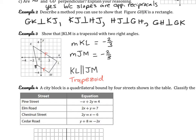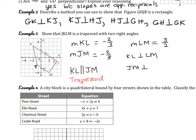Now we need to show there are two right angles. Finding the slope of LM — going up 3 over 2 — positive 3 over 2 is the opposite reciprocal of negative 2 over 3. So KL is perpendicular to LM, giving one right angle, and JM is perpendicular to LM, giving the second right angle.